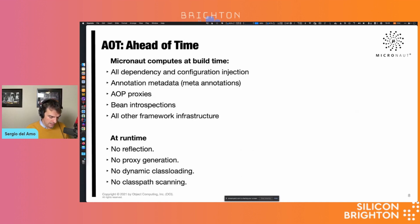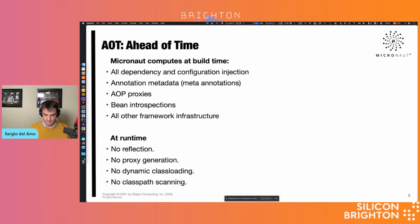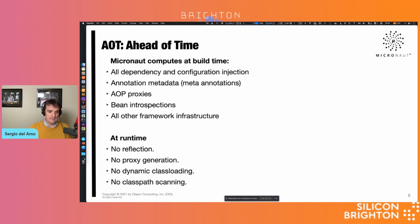When you hear about Micronaut, you will hear about AOT — ahead of time — and basically what we do is build as much as possible at build time. That includes dependency injection, configuration injection, annotation metadata, and AOP — which you'll see for example for validation or transaction demarcations. Bean introspections allow us to serialize and deserialize JSON without using any reflection. In general, we avoid reflection: no dynamic class loading, no classpath scanning, no proxy generation.